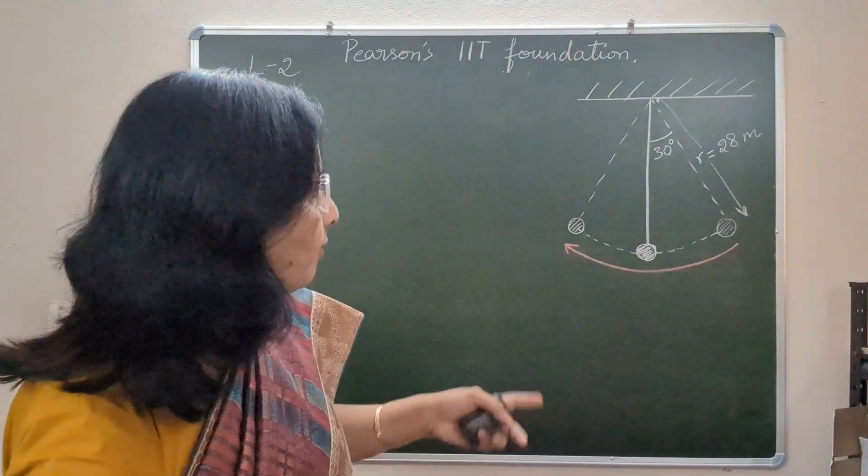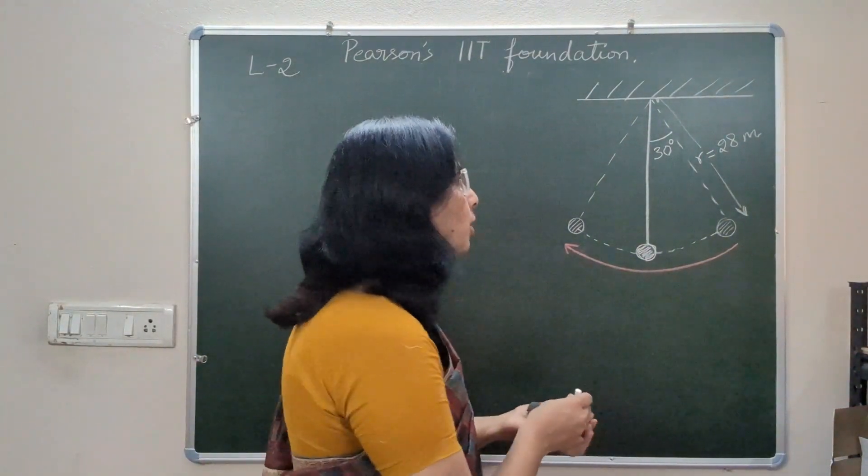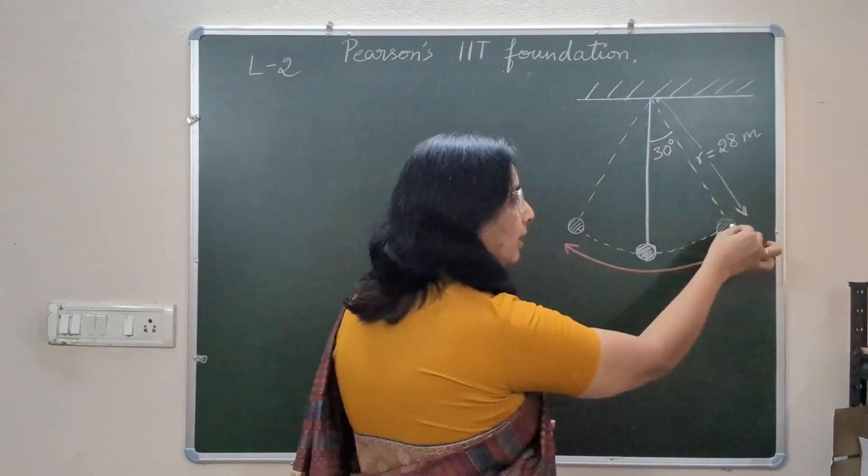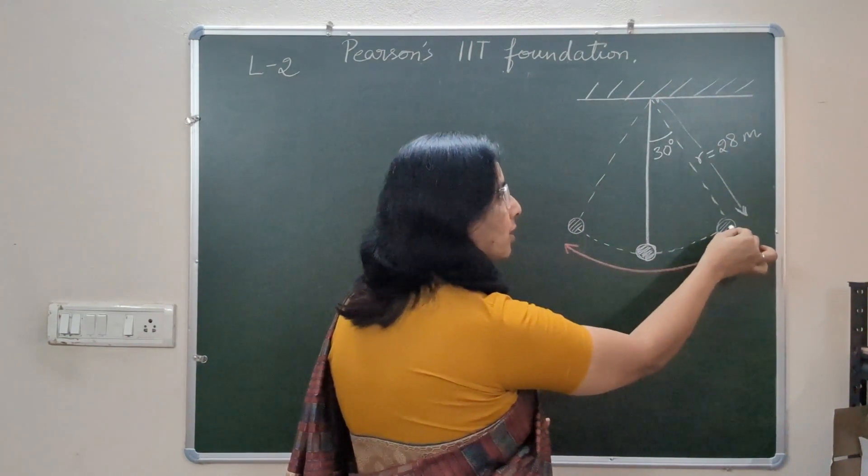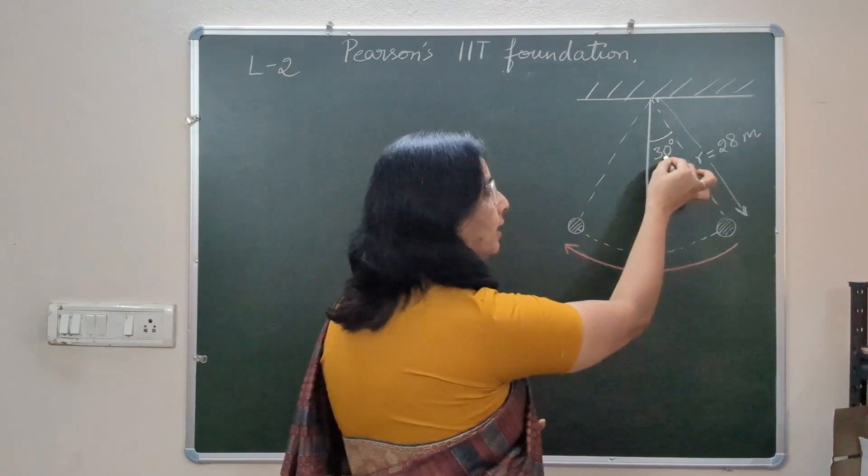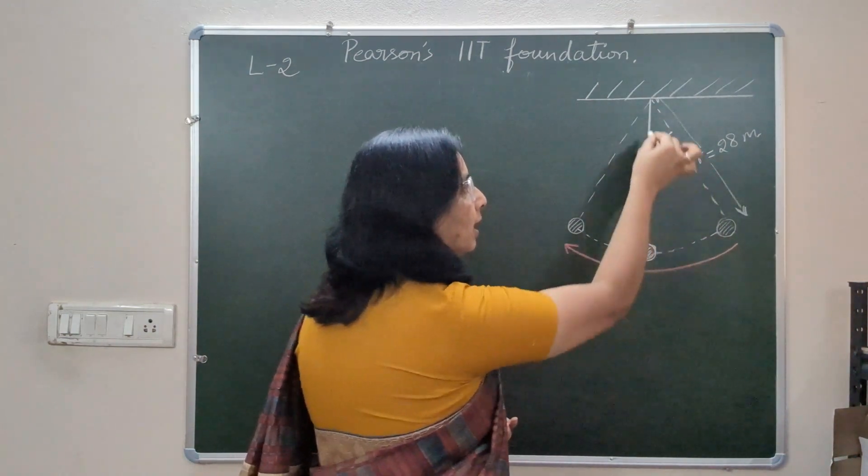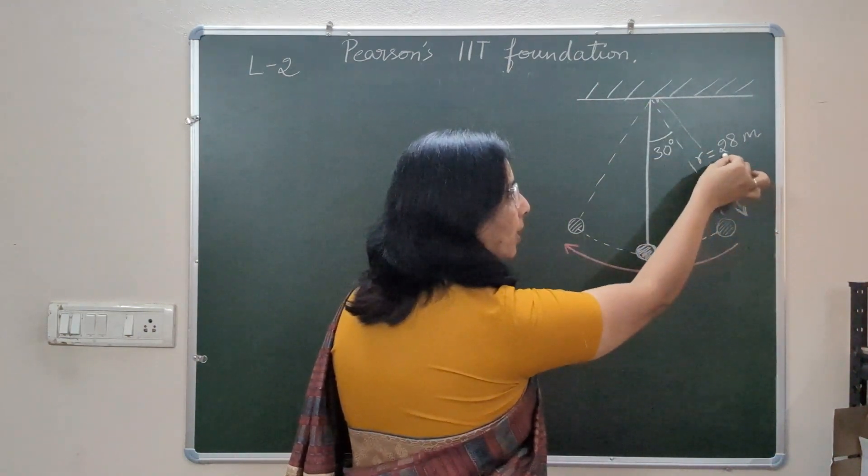To understand the question I have drawn a diagram. According to the question, the pendulum when it is at one of the extreme positions makes 30 degrees with the vertical line. Length of this pendulum is 28 meters.